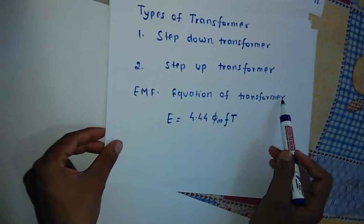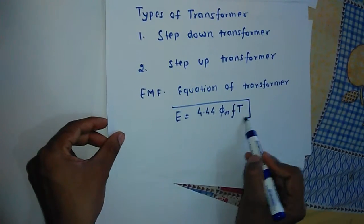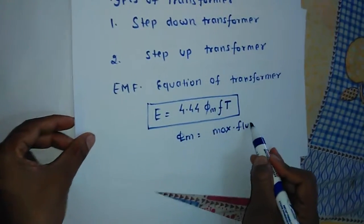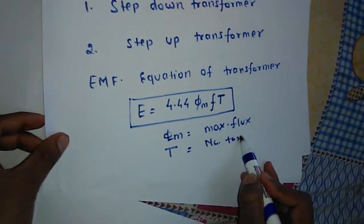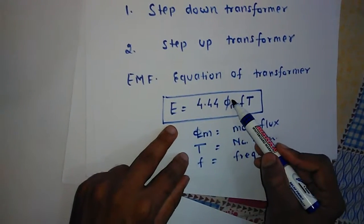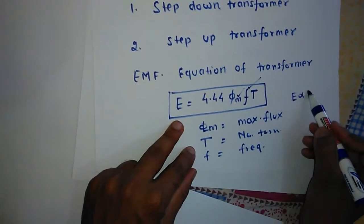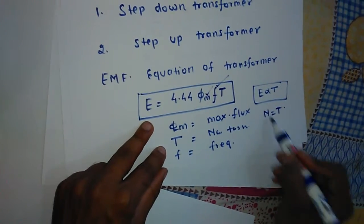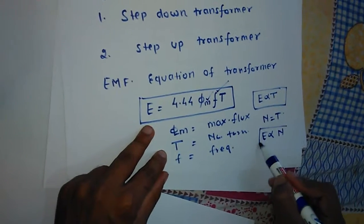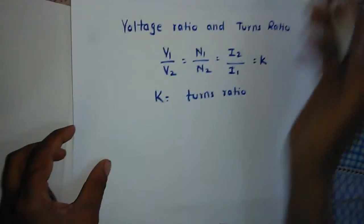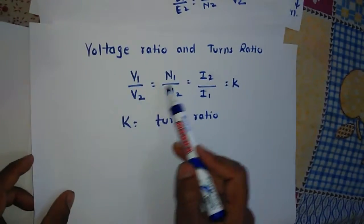The EMF equation of a transformer is decided by the relationship where E is proportional to φm (maximum flux), T (number of turns), and F (frequency). From this relationship, E is proportional to T, and since number of turns is also denoted by N, E is proportional to N. So the voltage changes according to the number of turns in the windings. This gives us the voltage ratio and turns ratio: V1/V2 = N1/N2.